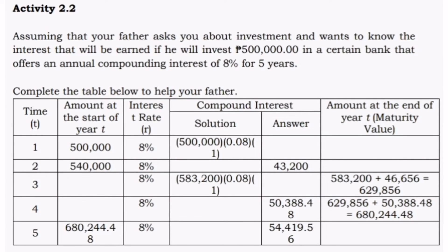Activity 2.2: Assuming that your father asks you about investment and wants to know the interest that will be earned if he invests 500,000 pesos in a certain bank that offers an annual compounding interest of 8% for five years, complete the table below to help your father.